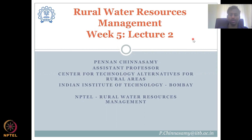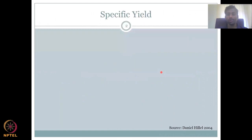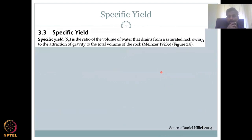In the past lecture we looked at porosity — we defined porosity, we defined spatiotemporal variations, and how it can be estimated. In today's lecture we would look at specific yield. It is defined as the ratio of the volume drained from a saturated rock due to gravity to the total volume of the rock.